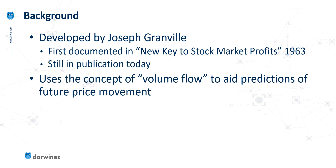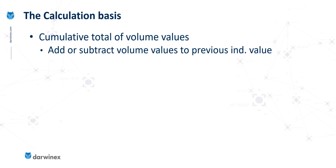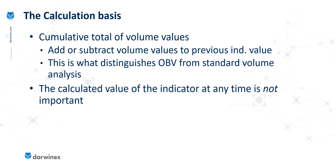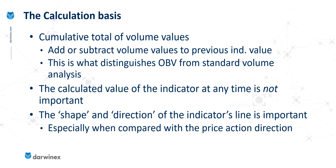Joseph talks about the way that this concept of on-balance volume looks at the volume flow and specifically looks at it to aid predictions of future price movements. This is an indicator that has a cumulative calculation — the value for any bar uses the previous bar's indicator value as a starting point and then either adds or subtracts a value to that. This is one of the main distinguishing features between the on-balance volume indicator and standard volume analysis. Typically with cumulative calculation indicators the actual value of the indicator isn't important at all, and that's the case for OBV.